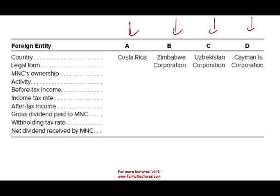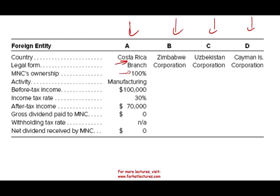Let's first take a look at our Costa Rican operation. It's a branch. The US multinational owns 100% and it's in manufacturing. Before-tax income is $100,000. The income tax rate is 30%, so after-tax income is $70,000. The $100,000 is the pre-tax income. They didn't pay any dividend, there's no withholding rate, and no net dividend was received.